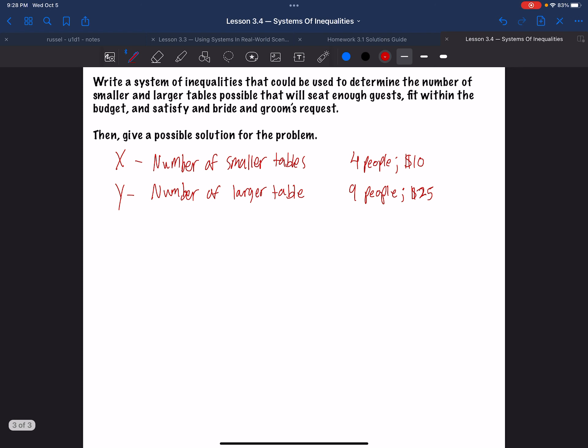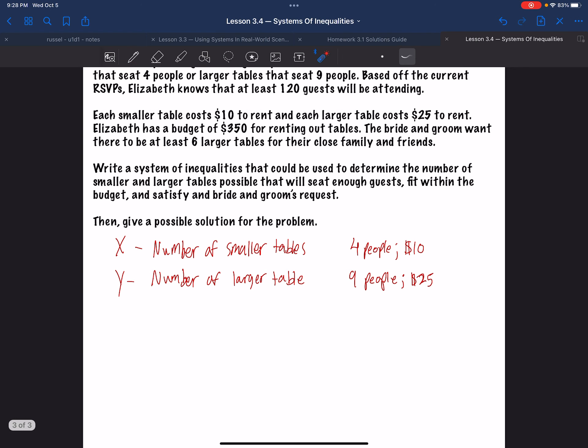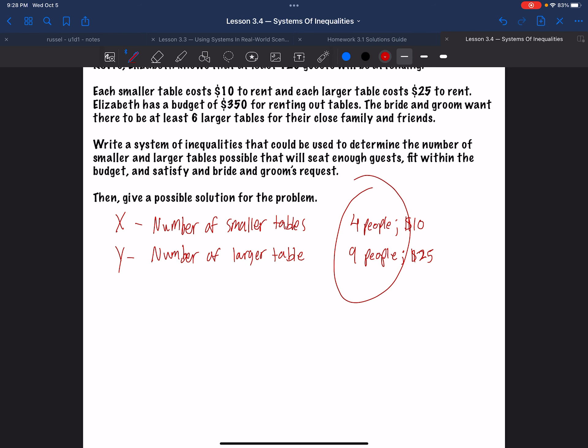So let's get started. Let's make this system here. First, let's define my variables. The variables in this case, the things that are changing is the number of tables. So I'm going to label, let's say, let's call x the number of smaller tables. And I will call y the number of larger tables. Okay. And just for future reference, just so we have it, smaller tables seat four people and they cost $10. The larger tables seat nine people, but they cost $25. Those must be some nice tables, right?